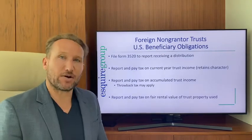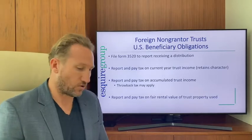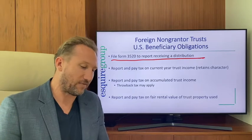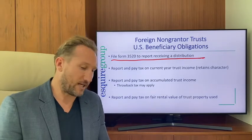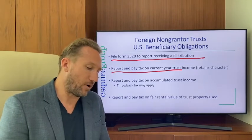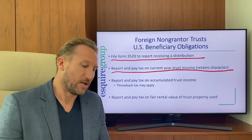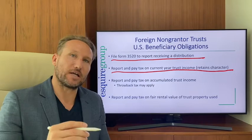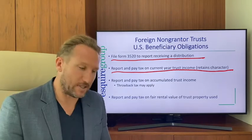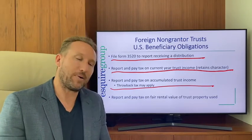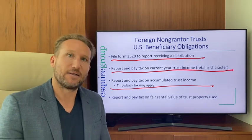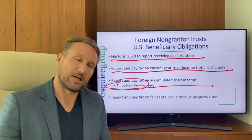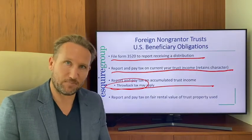For the beneficiary's obligations under a foreign non-grantor trust: if they received a distribution, they need to file Form 3520, report and pay tax on current year income distributed to them, and report and pay tax on any accumulated income distributed — remembering the throwback tax applies.